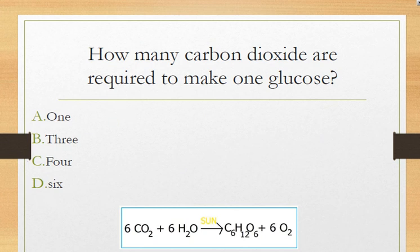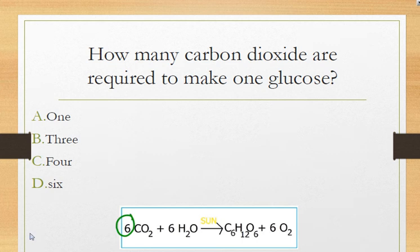Second question: how many carbon dioxide molecules are required to make one glucose? This is where it helps to know the reaction — just look at it. Six carbon dioxide molecules are needed. There is no coefficient in front of glucose, so you assume it to be one. To make one glucose, we need six carbon dioxide molecules.